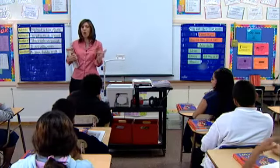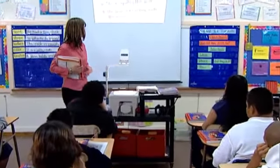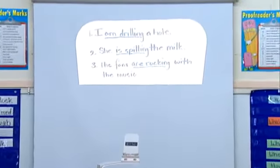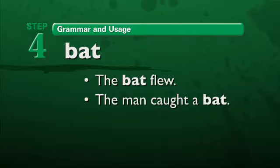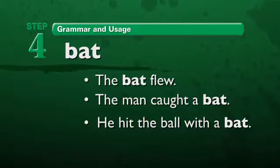Part of understanding words has to do with how the words are used in sentences. Building upon the concept of multiple meanings in step three, the same word can function in multiple ways. For example, even the simple word bat has layers of meaning depending on its function in sentences. Consider these sentences: The bat flew. The man caught a bat. He hit the ball with a bat. Note that bat is the subject of the first sentence, a direct object in the second sentence, and the object of a preposition in the last sentence. Same word, multiple functions.